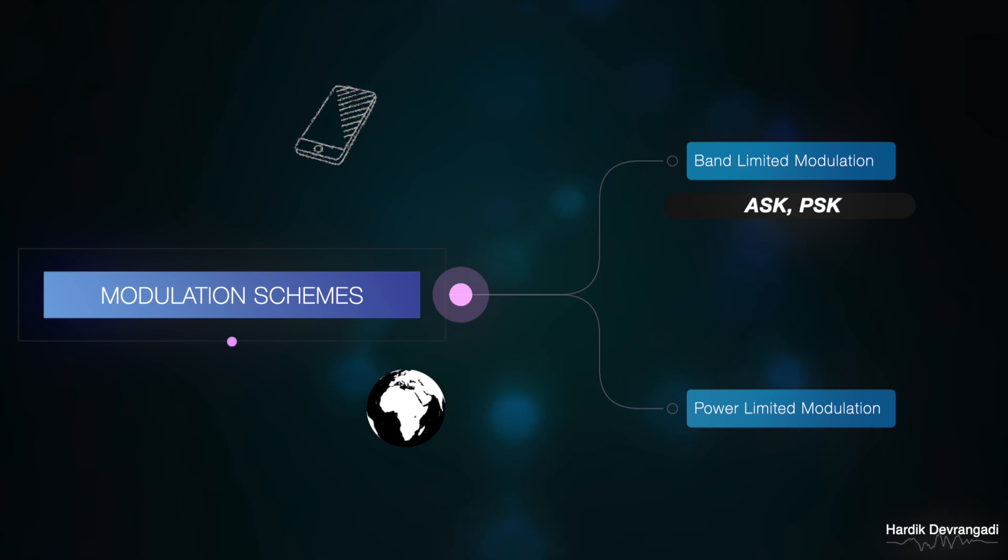ASK and PSK are examples of band limited modulation schemes. FSK is an example of power limited modulation schemes.